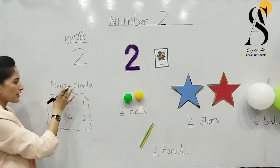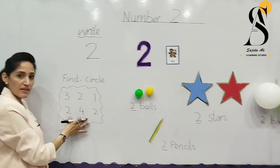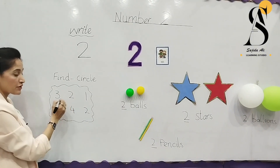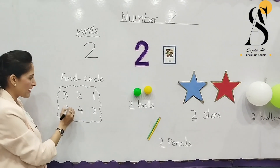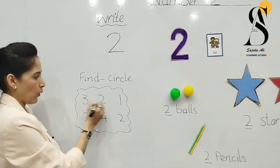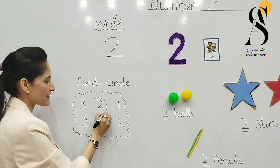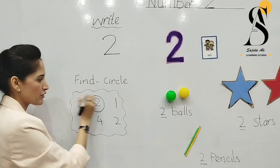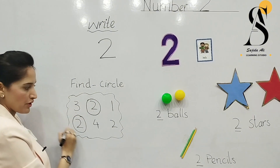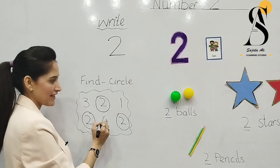Now what we have to do? You can see here the jumbled up numbers. We have to find number two from here. Is it number two? No. Is it number two? Yes — you will circle number two. And we are going to circle number two here and here.